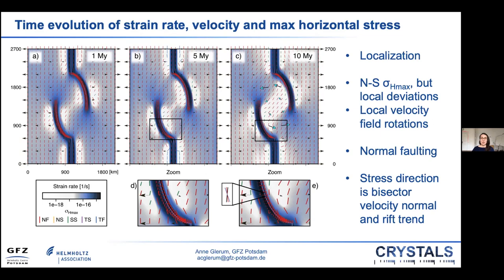To make changes in evolution of subsequent models more tangible, I quantify the rotation of the microplate by computing the Euler pole that describes the rotation of the microplate with respect to Nubia — the western plate. For the symmetric reference model, this pole ends up slightly north of the domain but in the center of the horizontal direction, as expected.